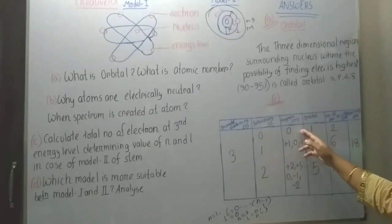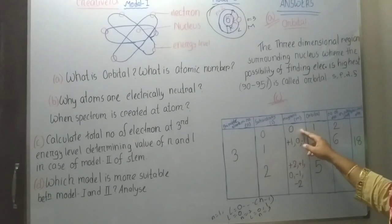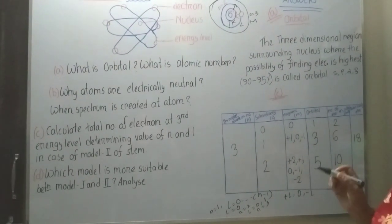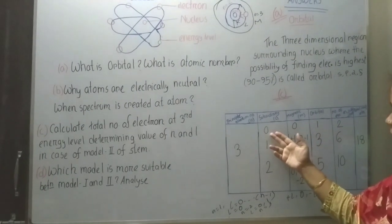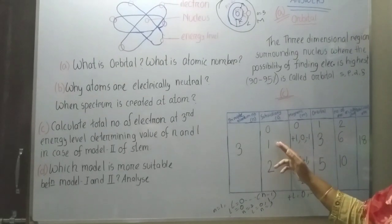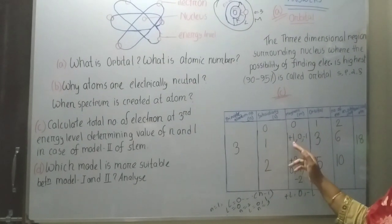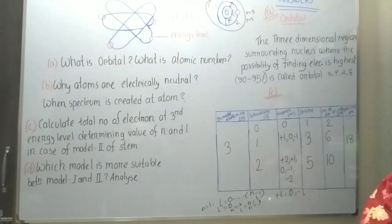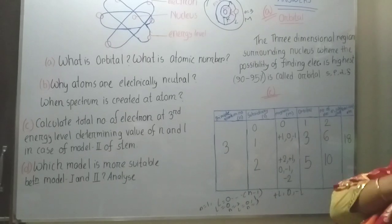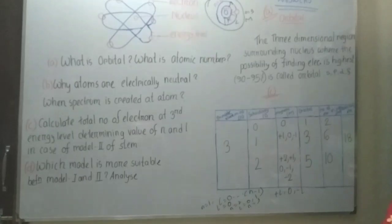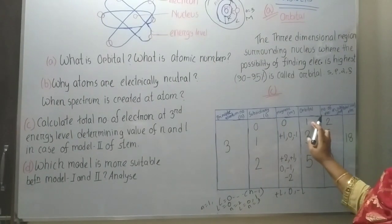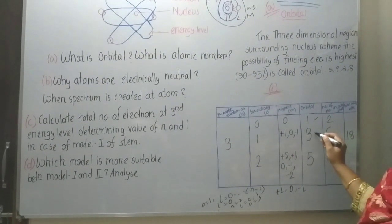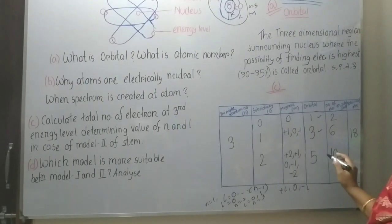Now come to the magnetic quantum number, expressed by small m. The value of the magnetic quantum number ranges from plus l, through 0, to minus l. For l equals 0, there is one value of m. For l equals 1, m equals plus 1, 0, minus 1 — three values. For l equals 2, m equals plus 2, plus 1, 0, minus 1, minus 2 — five values. For each value of m, one orbital is found. So there is 1 orbital for l=0, 3 orbitals for l=1, and 5 orbitals for l=2.